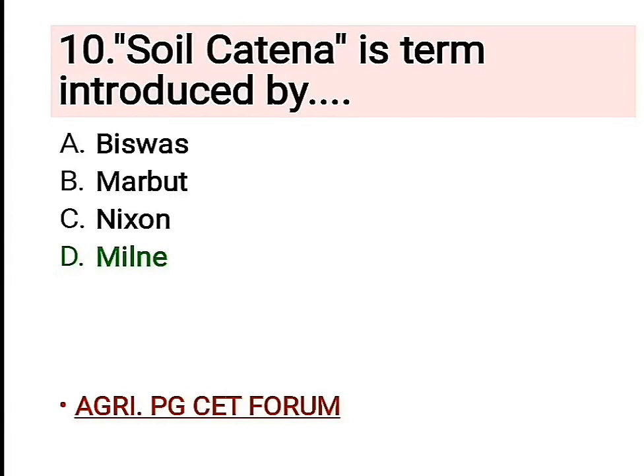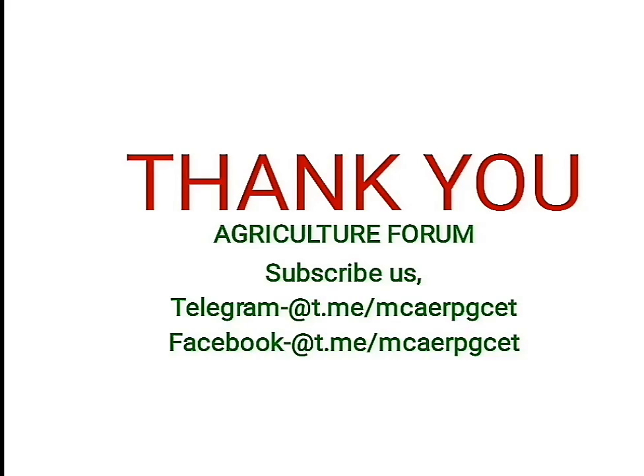Tenth question: the term soil catena was introduced by — and the right answer is D, Milne. Soil catena is a sequence of different soil profiles that occur down the slope. These are the 10 important questions for all of you — read them properly, remember them, and recall them regularly.